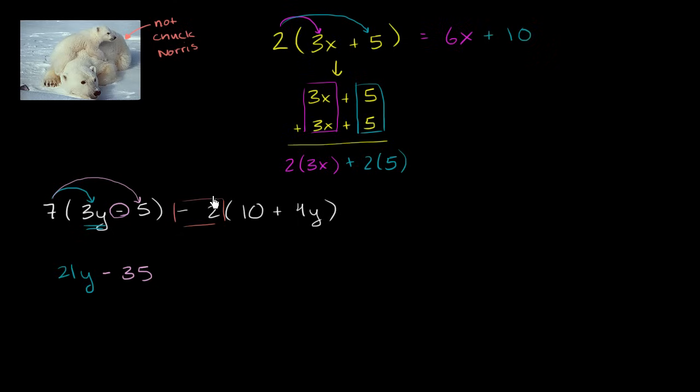As negative 2. And we're going to distribute the negative 2 times 10, and then negative 2 times 4y.